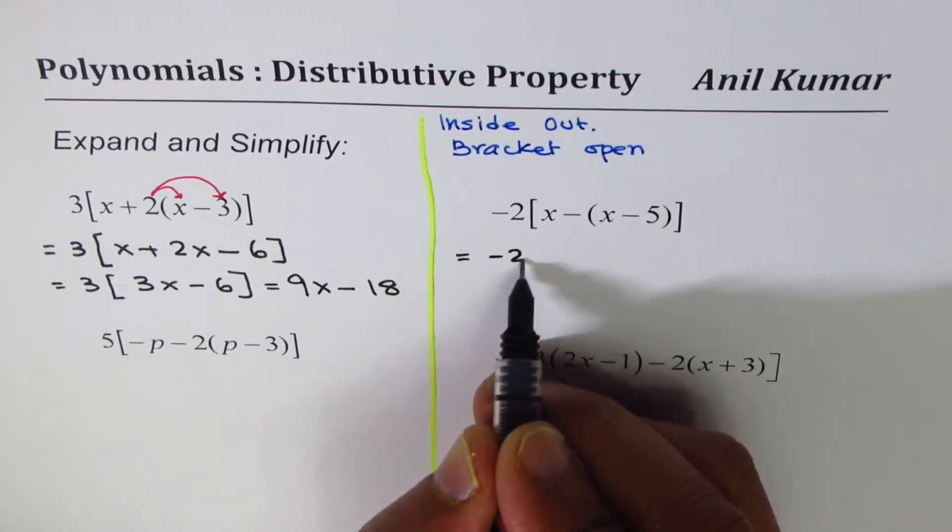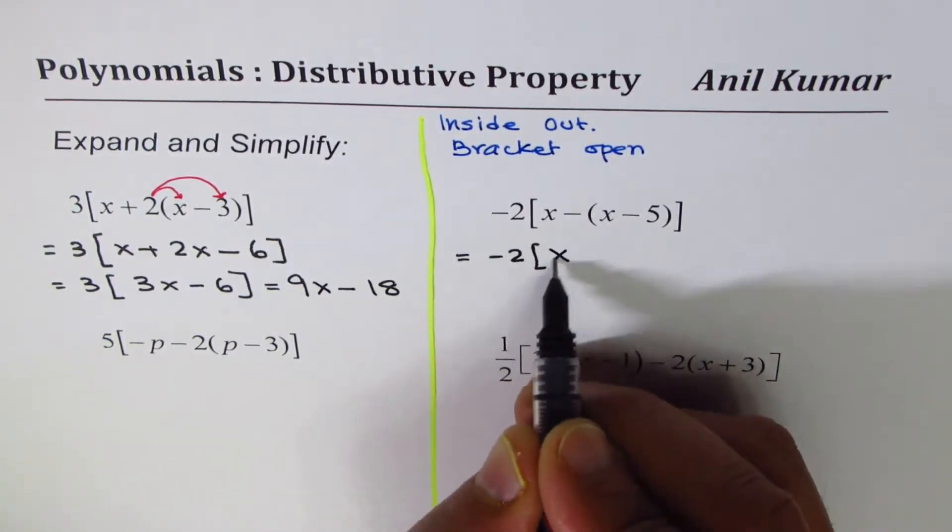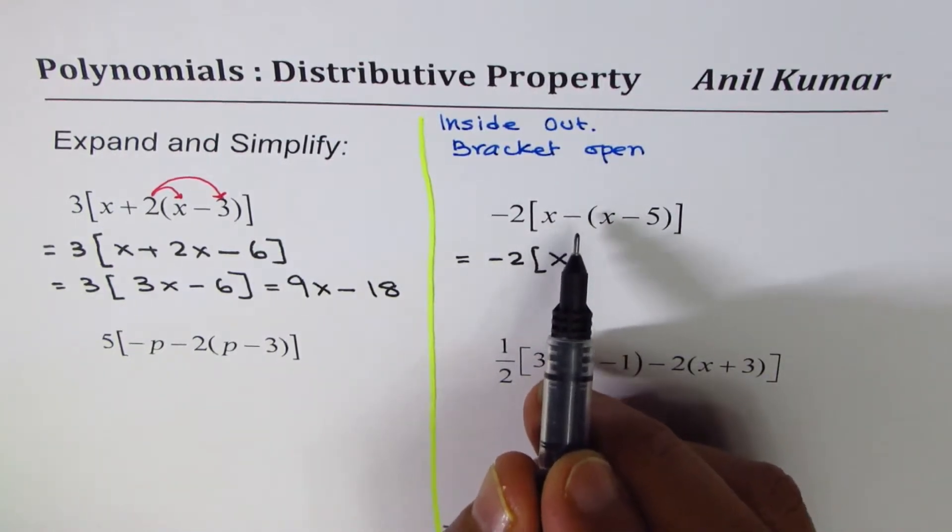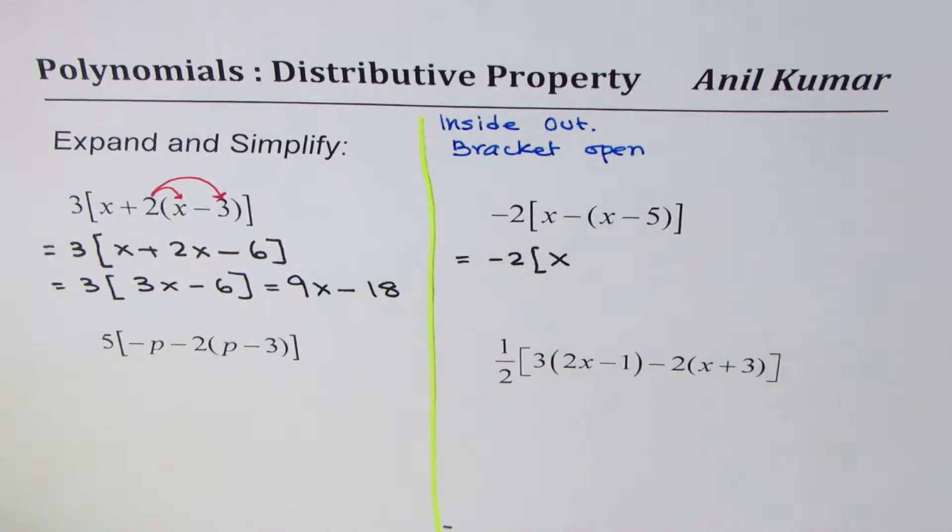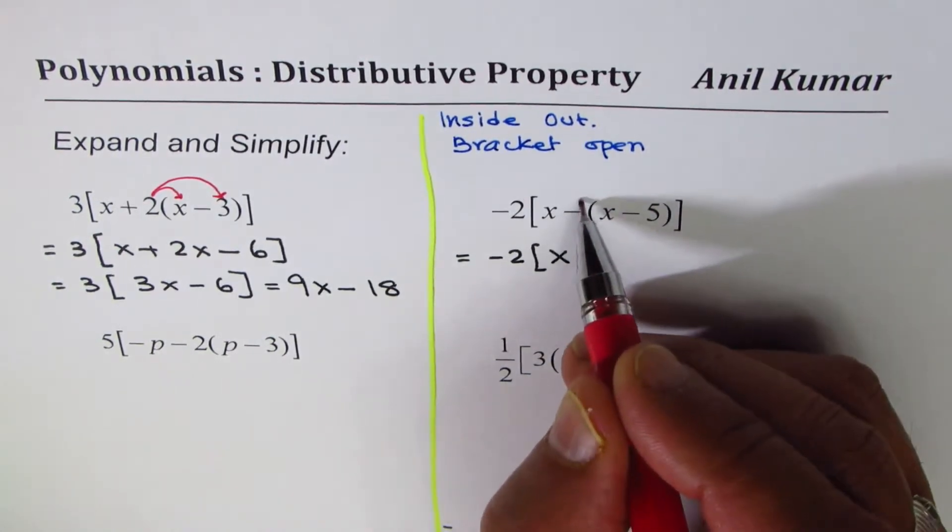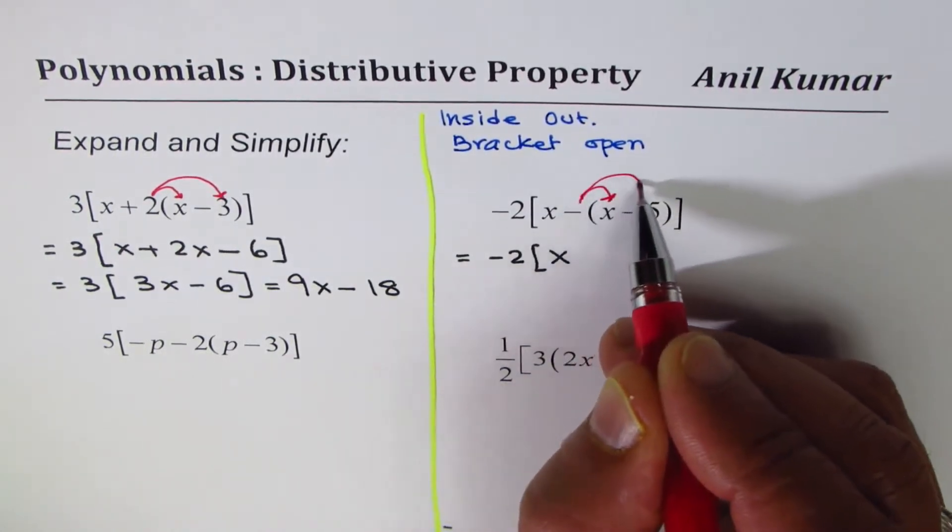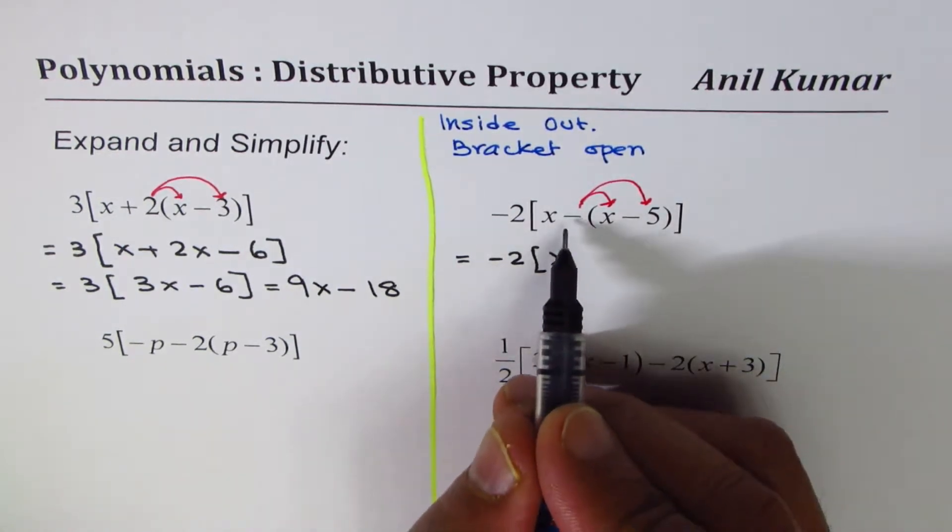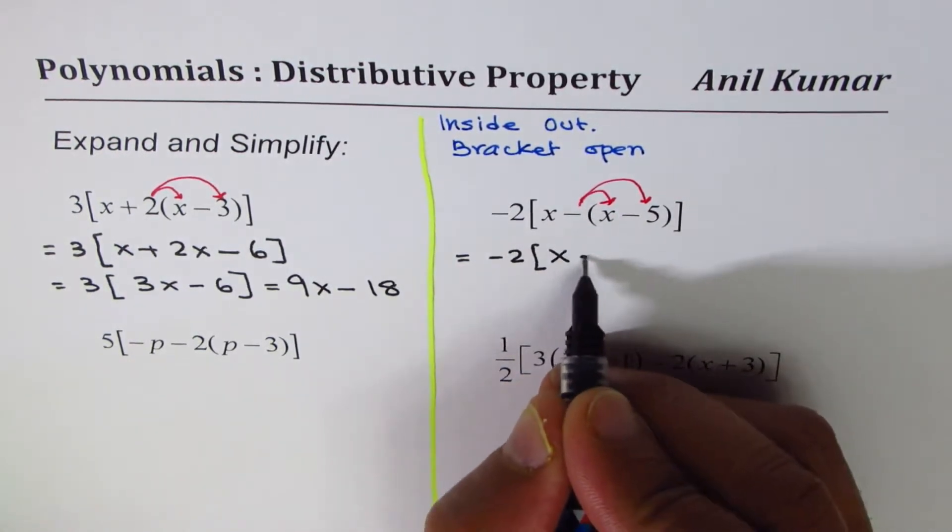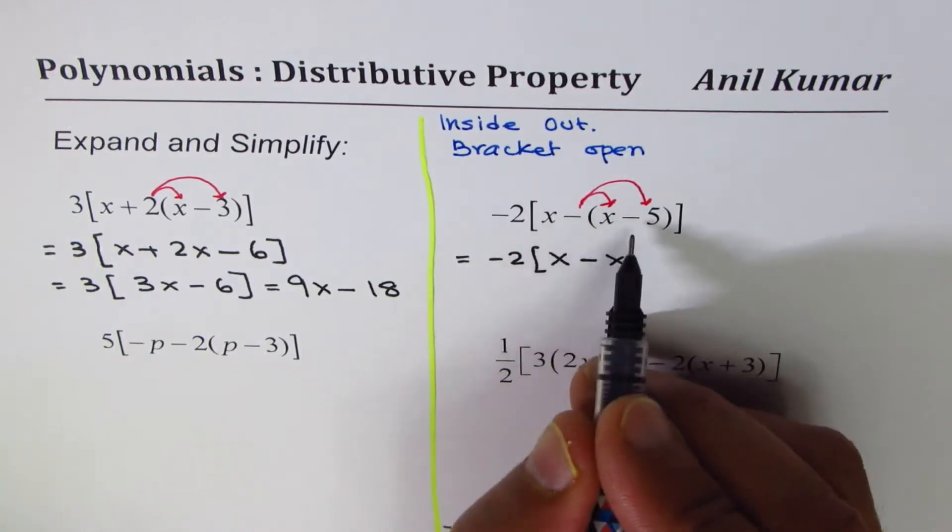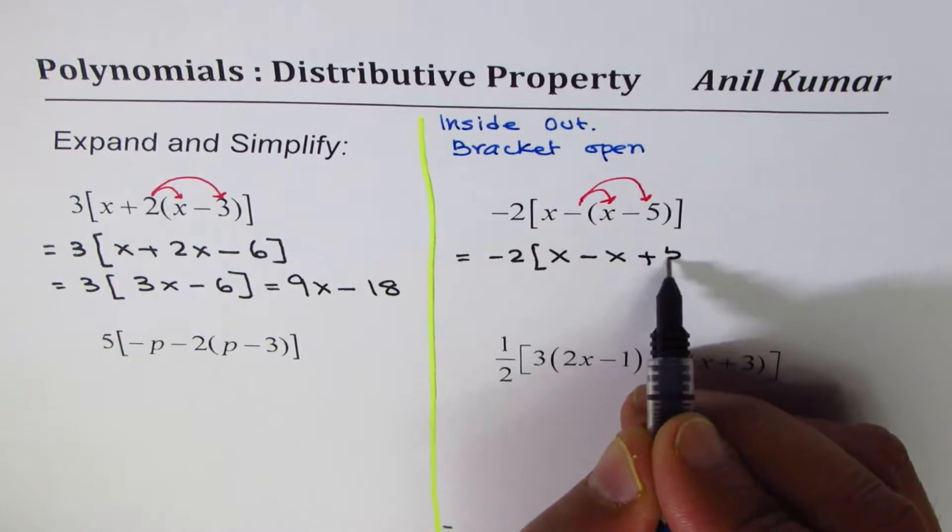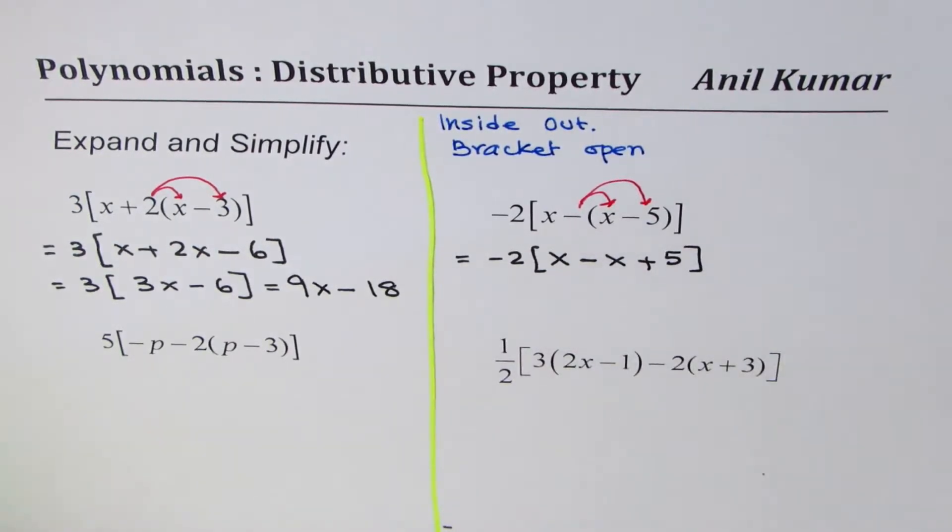Now we have to multiply every term by minus 1. Do you see that? So we'll multiply x by minus 1 and also minus 5 by minus 1. Minus 1 times x is minus x. Minus 1 times minus 5 will be plus, minus minus makes it plus 5.